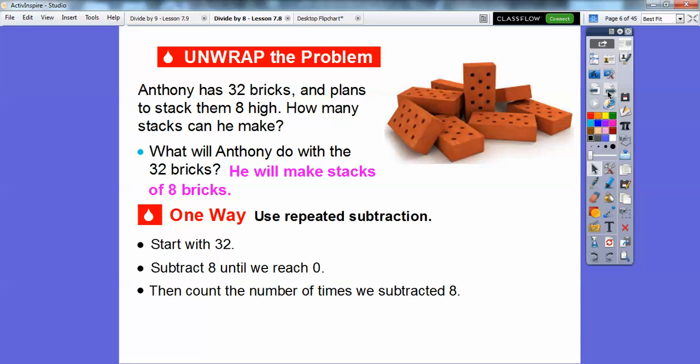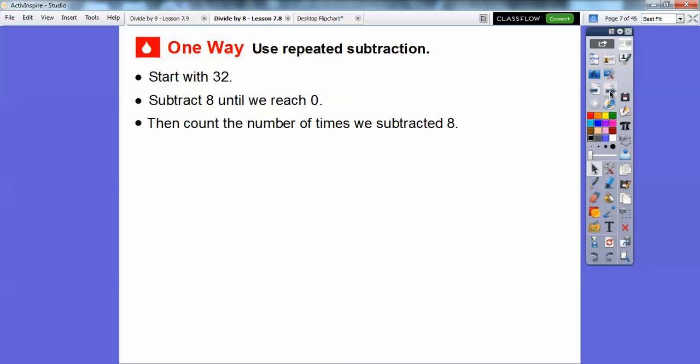So here's one way we can use repeated subtraction. So we did this in an earlier lesson. So we'll start with the 32, and then we subtract 8, and we continue to subtract 8 until we finally reach 0. And then we count the number of times we subtracted 8. So here we go. So we're going to subtract 8. 32 minus 8 is 24. And now that's the number of times that we subtracted 8 is 1 here.